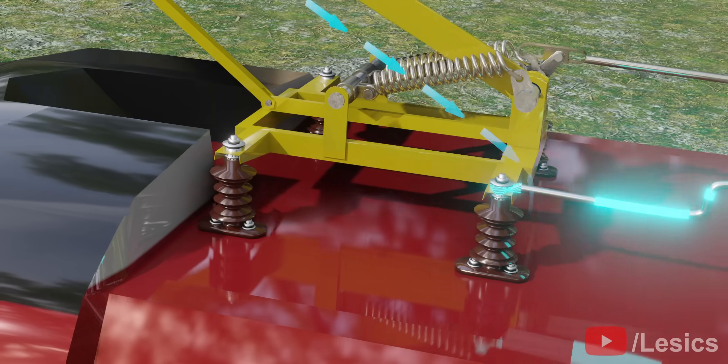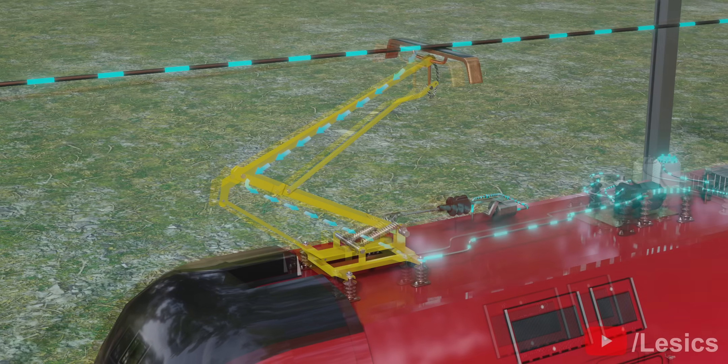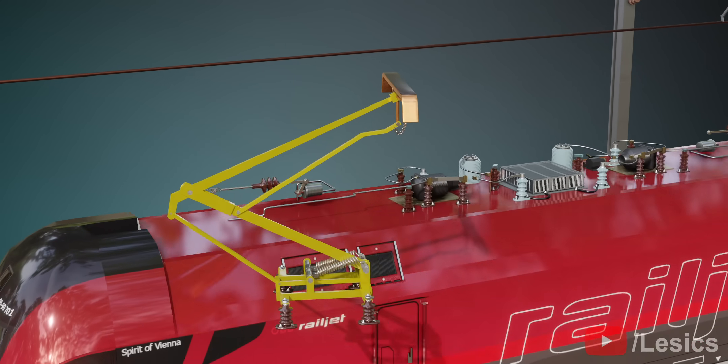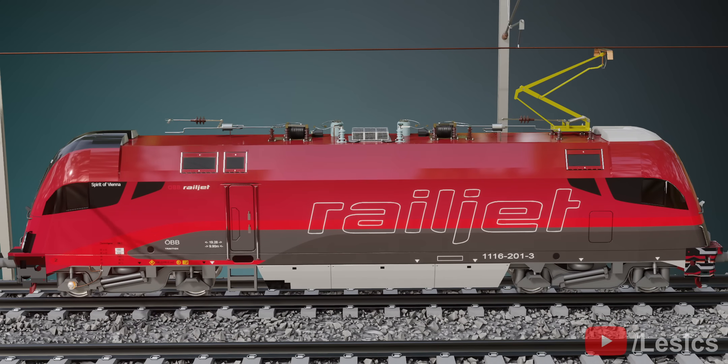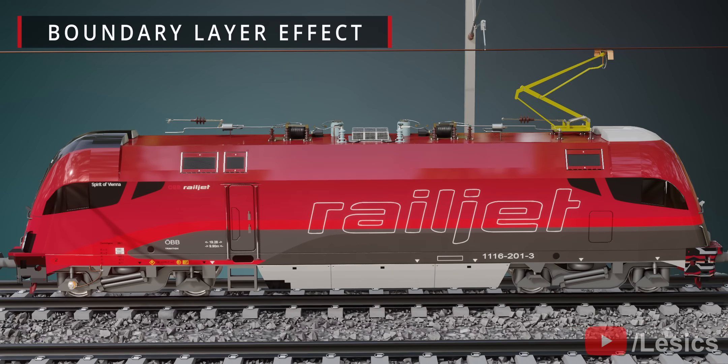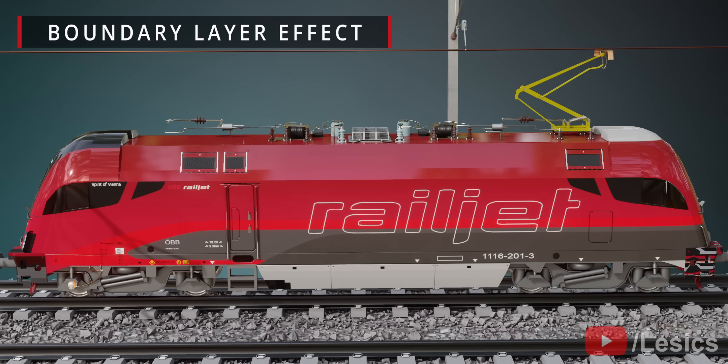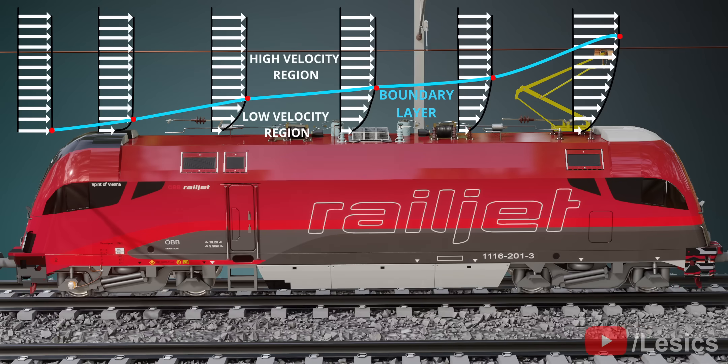Fantastic! We have now designed the pantograph completely. You might have seen that most of the time, the pantograph is connected at the rear of the engine. This simple change will reduce the aerodynamic drag considerably. The reason is the boundary layer effect.